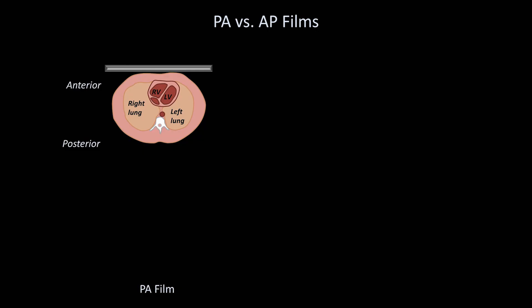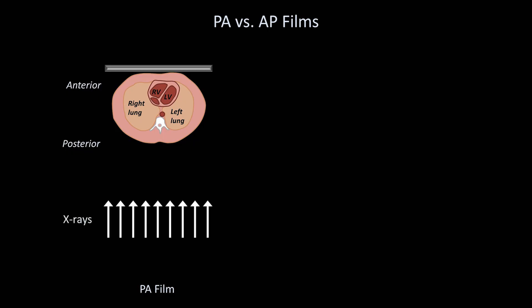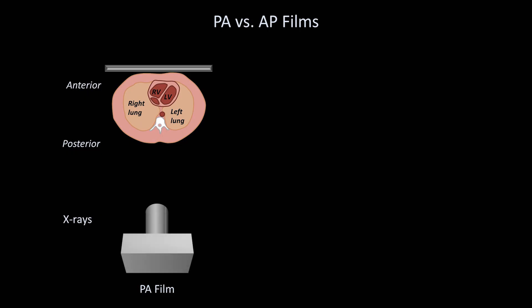The patient's front is up against the photographic plate. In prior videos, I've implied that x-ray beams are all parallel to one another, but this isn't actually true. The x-ray source is a fixed point, and therefore the x-ray beams actually diverge outward as they get further from their origin.